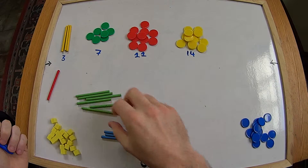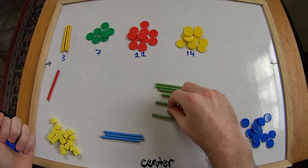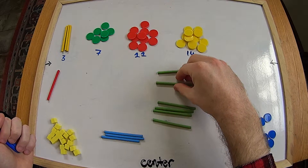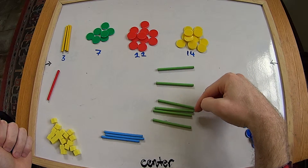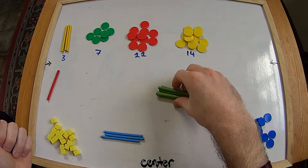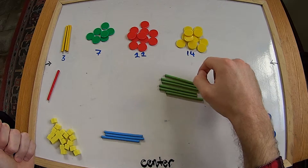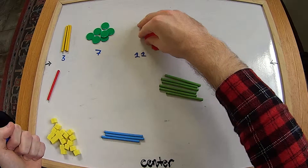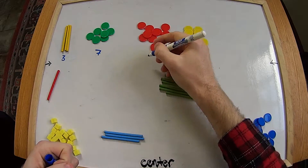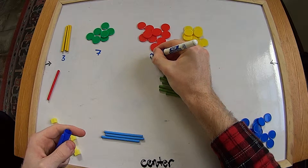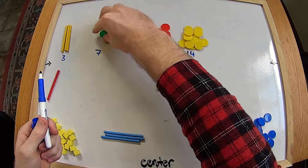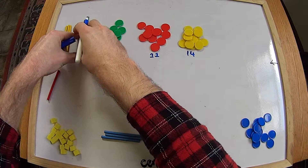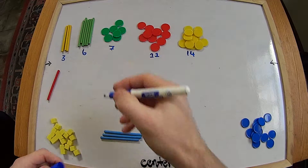Let's do our green sticks next. We'll spread these out so we're not counting them twice and try to prevent them from rolling everywhere. One, two, three, four, five, six - six green sticks. That's less than fourteen, less than eleven, just less than seven, but bigger than three. We'll just squish our sequence along and squeeze the six green sticks in there.